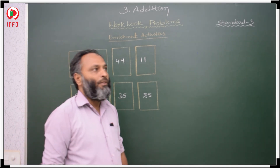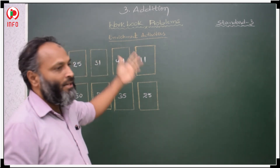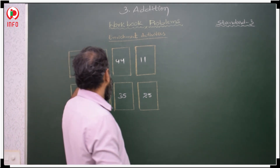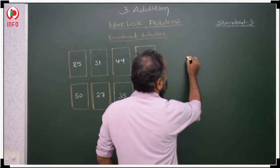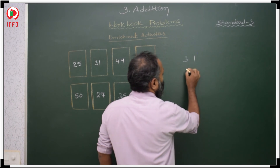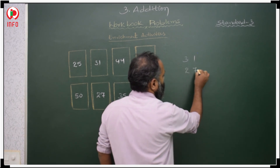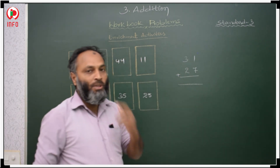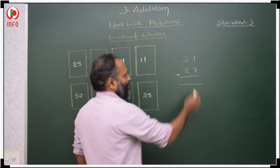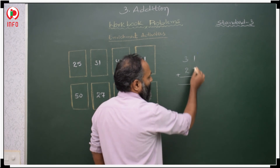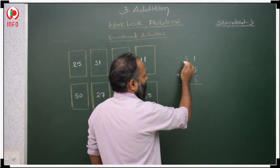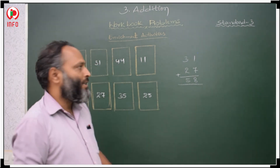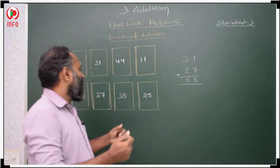After preparing your flash cards, select any 2 cards. For example, I select 31 and 27. Now add these 2 numbers: 7 plus 1 is 8, 3 plus 2 is 5 — the sum is 58. Like this, select any 2 cards and find the sum.